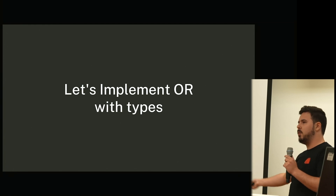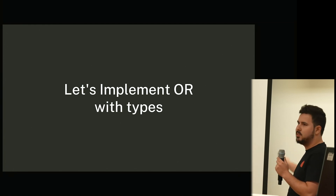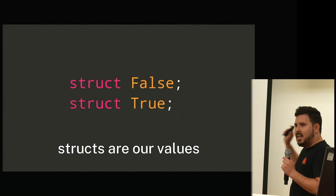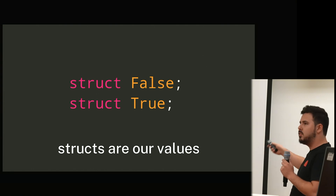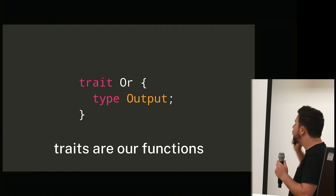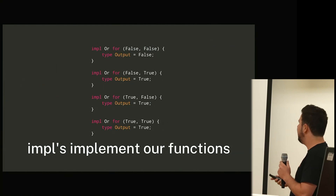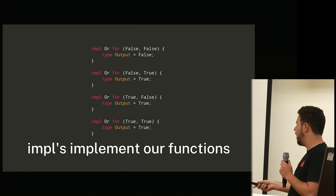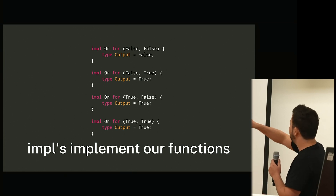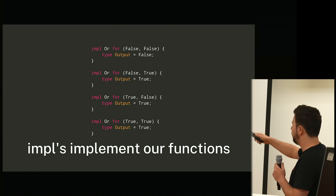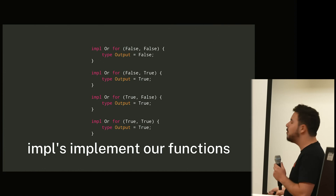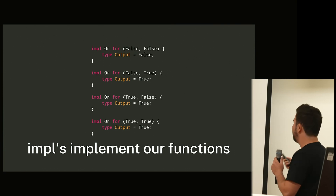In the world of types, structs are our values. So I declare a struct False and a struct True — note they don't have any fields, just unit structs in Rust. Traits define our functions in this fancy type world: we have a trait Or with some associated type Output. And then impls — implementing these traits with the associated types — actually define our functions. Watch this: I have impl Or for a tuple of the type False and the type False, and I declare the associated type Output to be False. Then false-true gives me true, true-false gives me true, and true-true gives me true. No code here, but you can kind of see the structure of a logical OR forming.